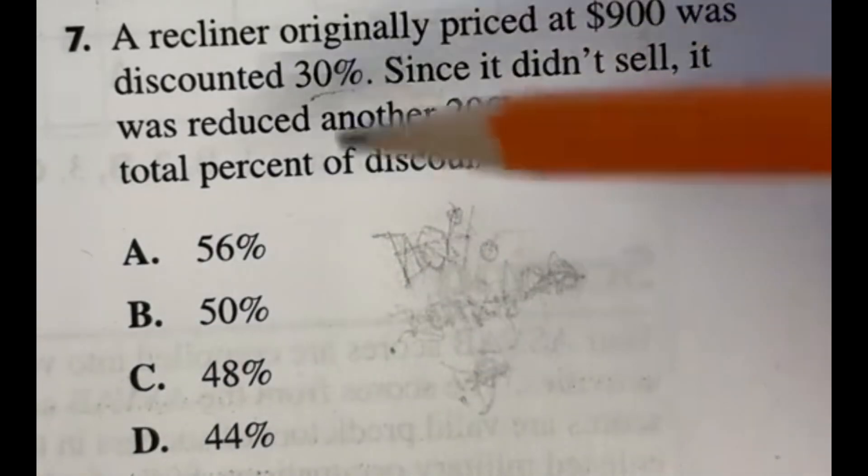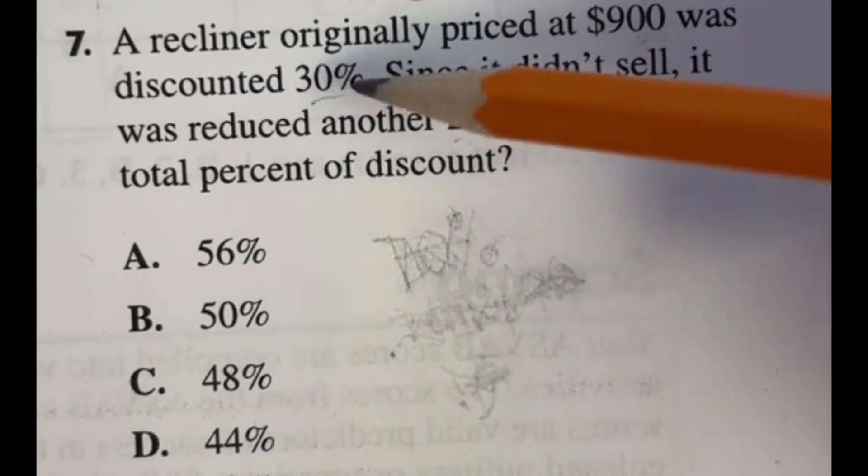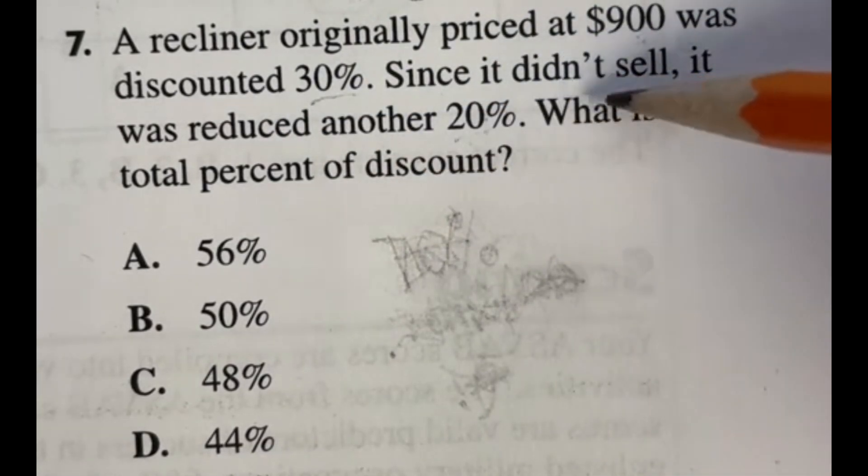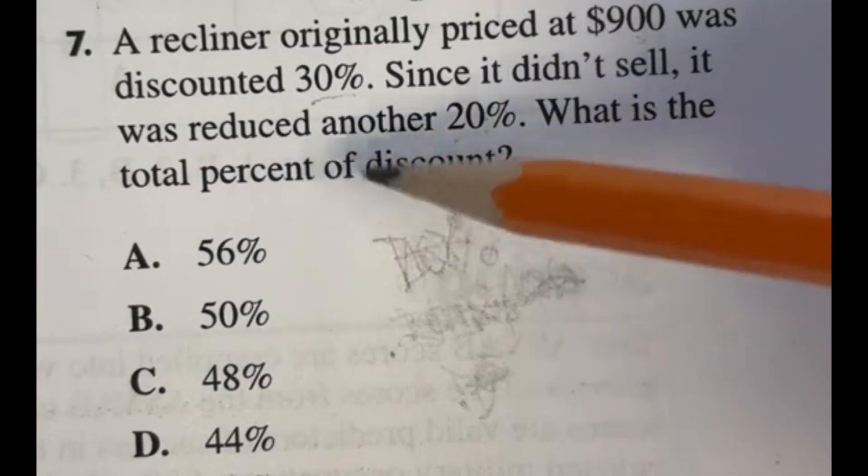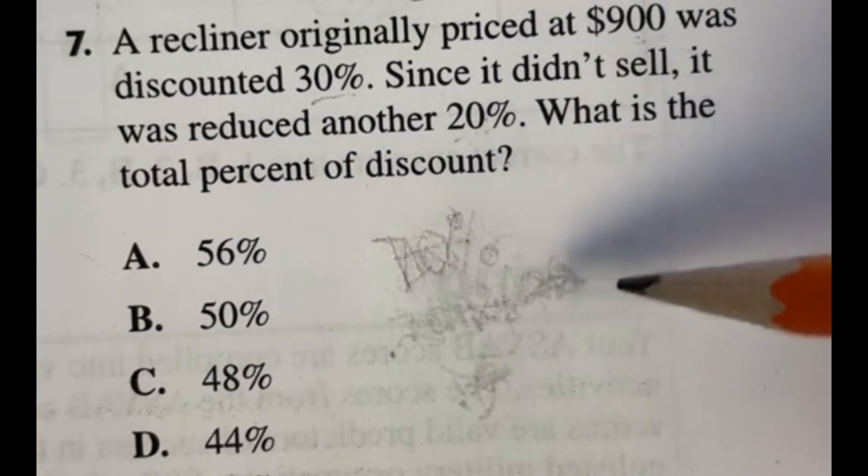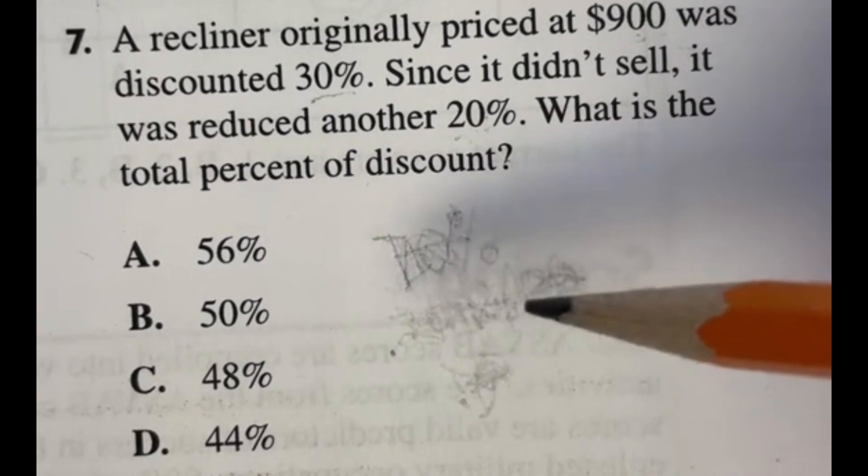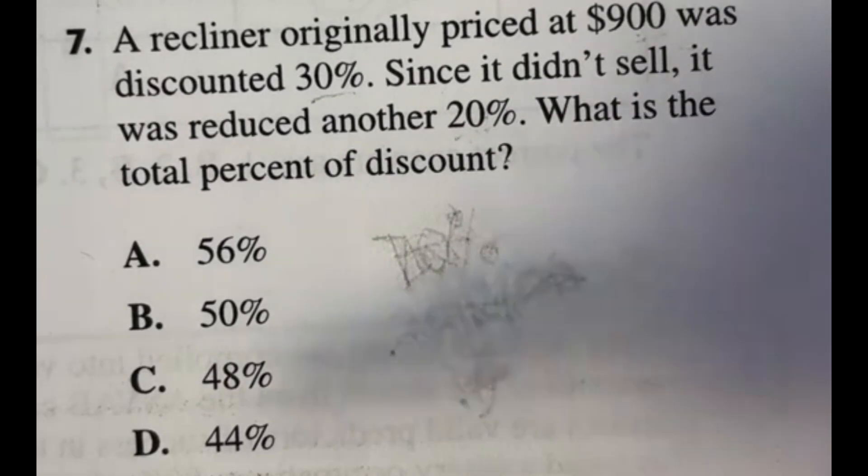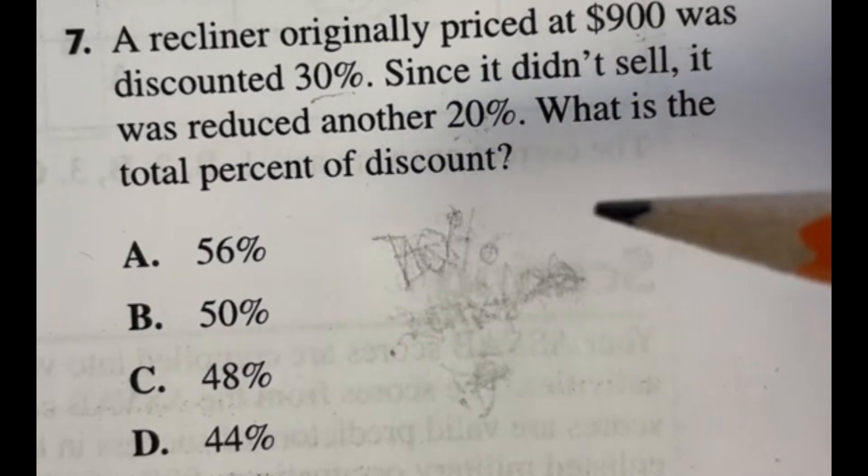So this question says a recliner originally priced at $900 was discounted 30 percent. Since it didn't sell, it was reduced another 20 percent. What is the total percent of the discount? Now again, there's lots of ways to do this, but without having a calculator, sometimes it's easier to do these roundabout ways of answering this than it is to try to do it straightforward.